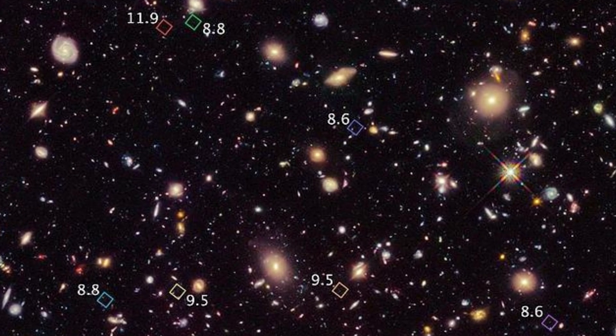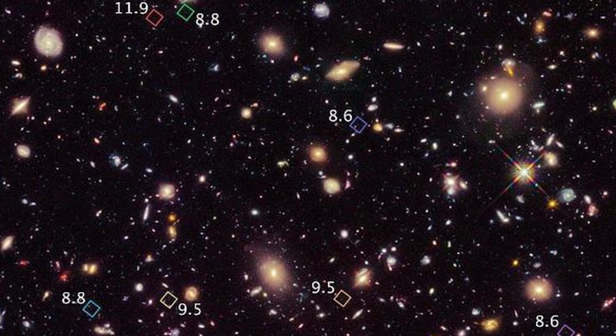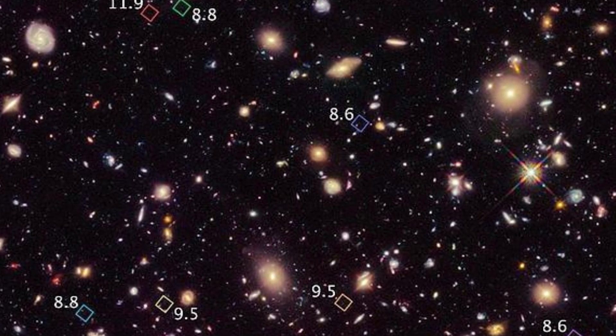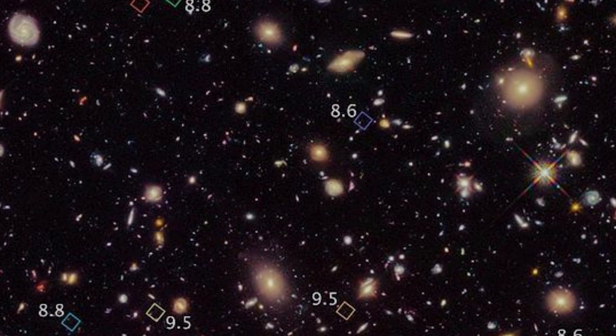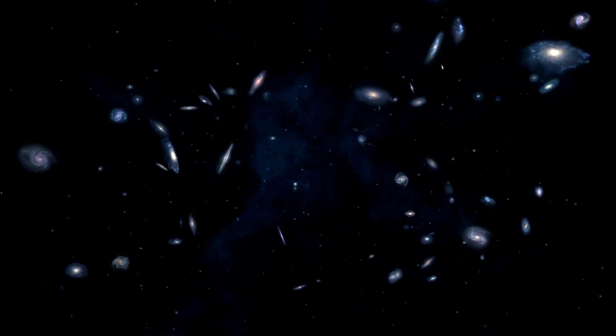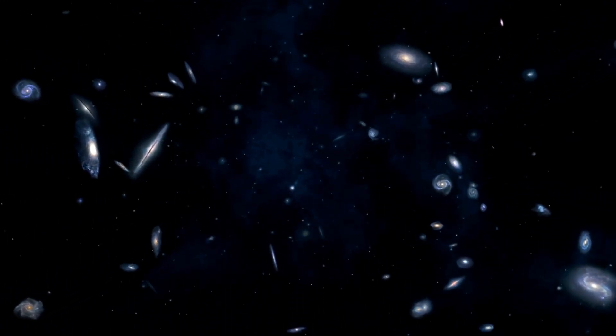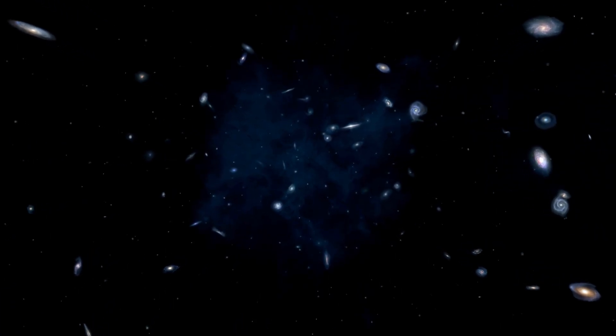The fact that the observed galaxies are two to three times smaller than similar galaxies imaged by the Hubble Space Telescope completely defies the expected behavior in an expanding universe. According to the hypothesis, as the universe expands, objects should appear larger as distance increases. However, these James Webb observations show galaxies that defy that expectation.